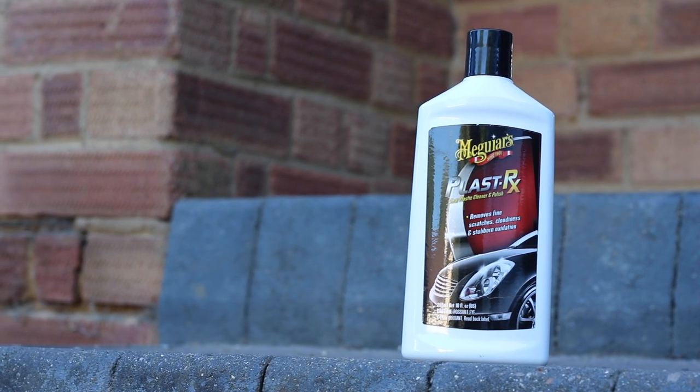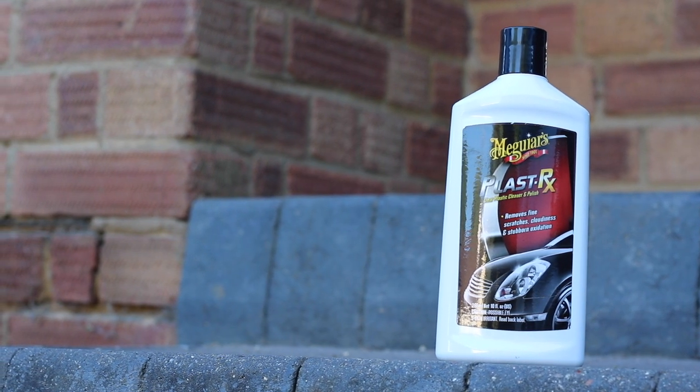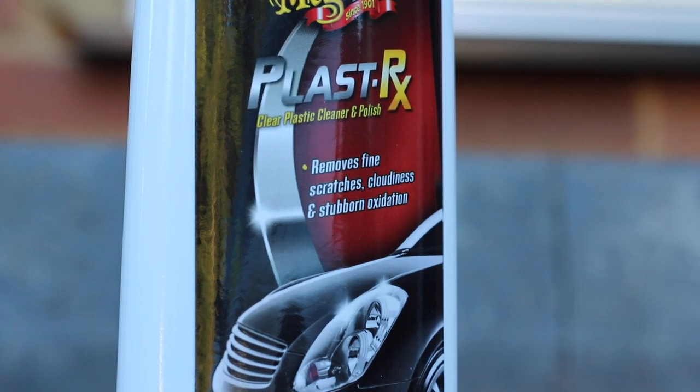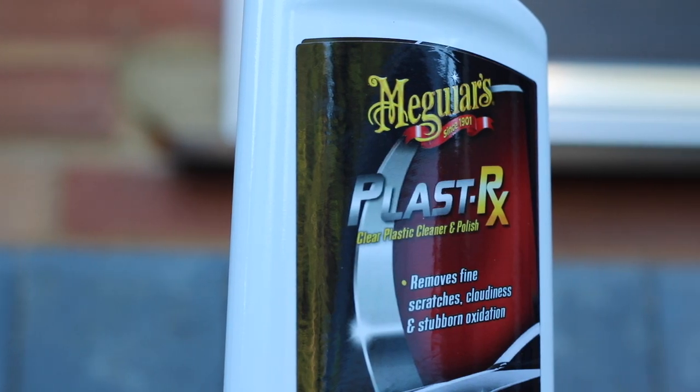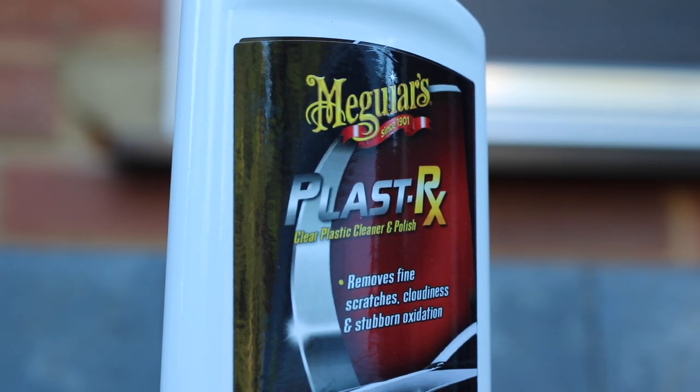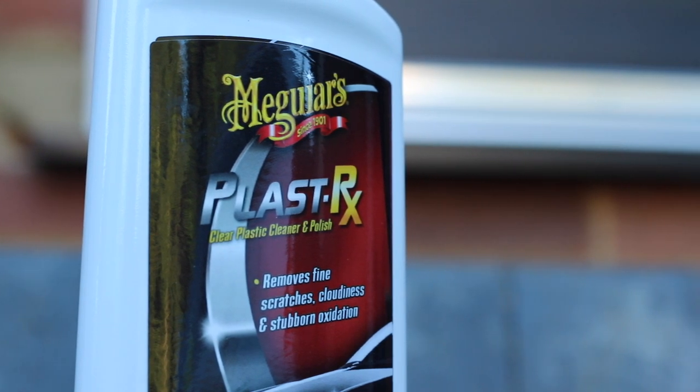Over time, plastic rear windows on convertible roofs can often become clouded and hard to see out of. It was time to grab some Meguiar's Plastic RX and restore a Ferrari F430 rear window.